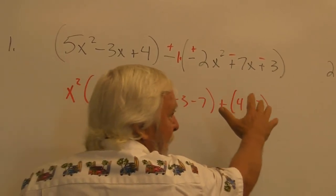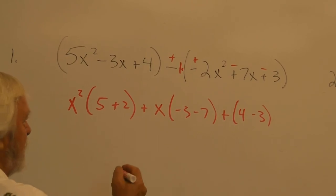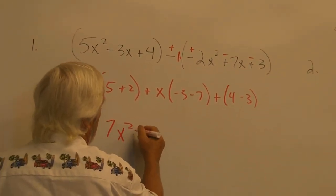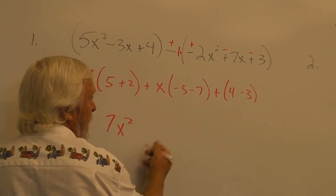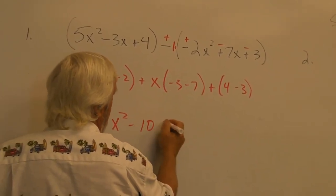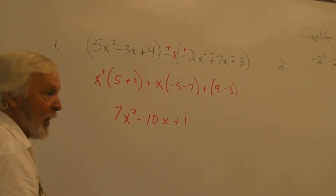Very, very common problem. You will definitely see it two or three times on the final. So we want to make sure we can get this one right. All right, that's what? 7x squared minus 10x plus 1. I'm so happy.